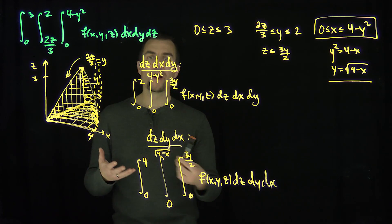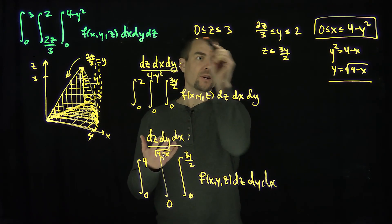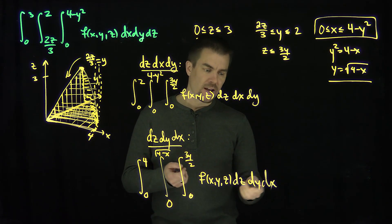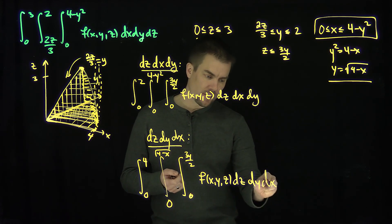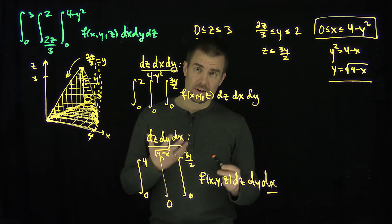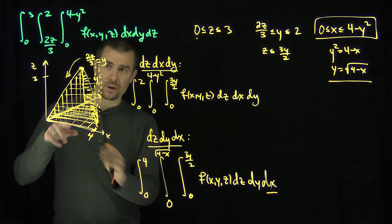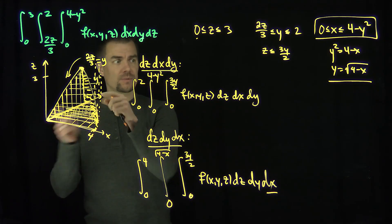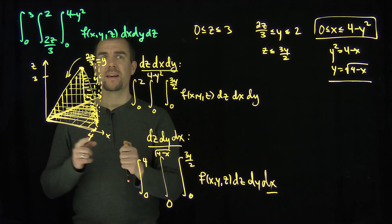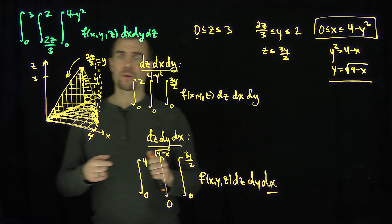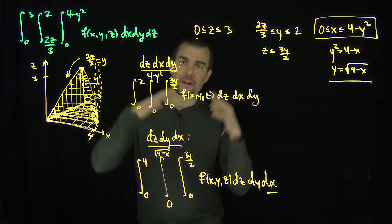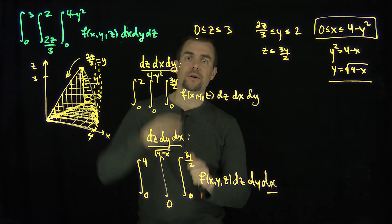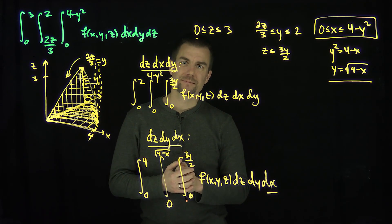We can do the other three orderings by similar arguments, checking the inequalities geometrically. If the x differential is last, the outer integral goes from 0 to 4. If the y differential is last, it goes from 0 to 2. If the z differential is last, it goes from 0 to 3. Then find the corresponding shadow region and the surface integration. Thank you very much.